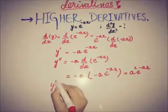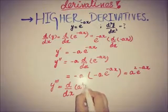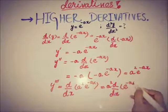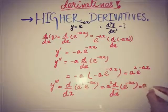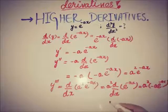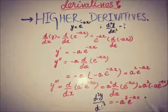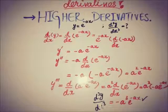Now for the third derivative, y-triple-prime = d/dx of a² e^(−ax). Again, the derivative of e^(−ax) is −a e^(−ax), so we get a² · (−a) · e^(−ax) = −a³ e^(−ax). This is the required answer — the third derivative. As you can see, it is really easy to find higher derivatives once the first derivative is clear. In the next video we will talk about some expansion formulas, so stay tuned. Goodbye!